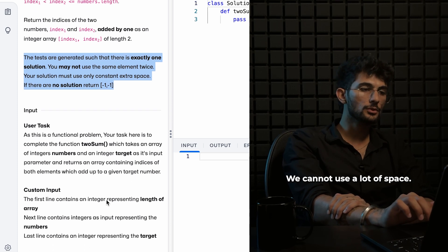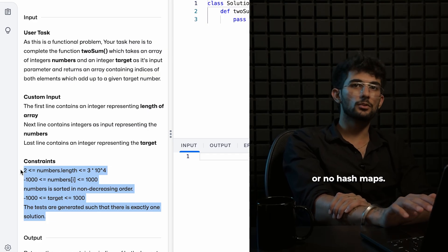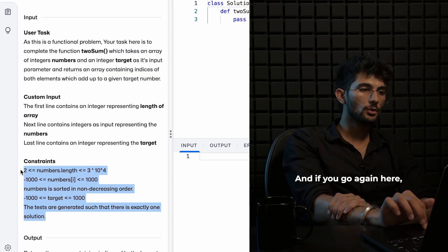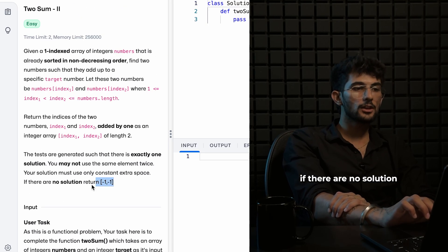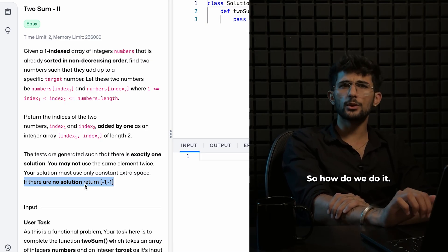And also there's an important constraint here. We cannot use a lot of space. So there are no extra arrays or hash maps. And if you go again here, if there is no solution, then we need to return minus one, minus one.